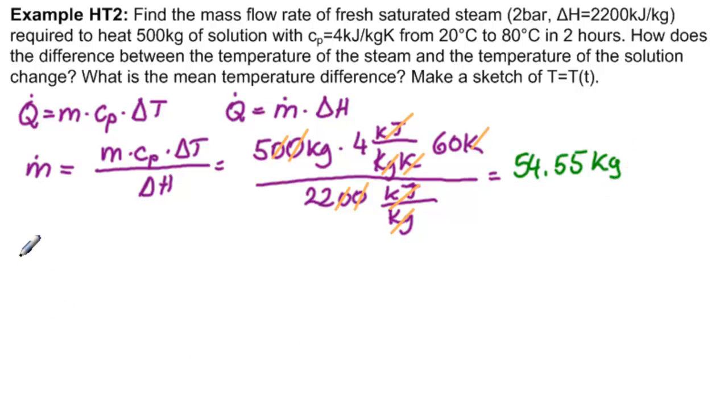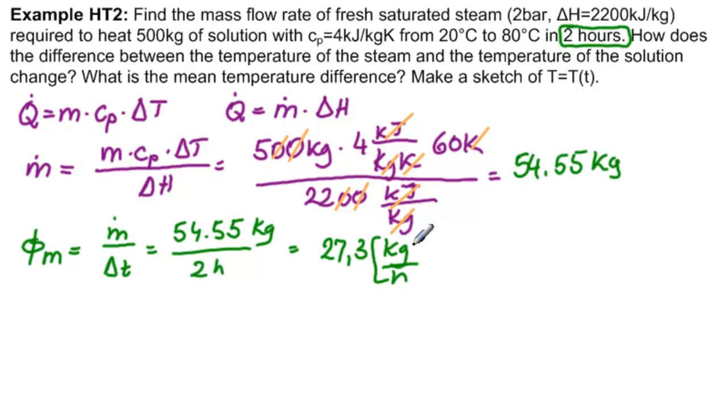And so let's get our rate, which would be divided by this 2 hours here. So our mass flow rate, divided by our time, would be 54.55 kilograms in 2 hours, or 27.3 kilograms per hour. And so that is our mass flow rate. And with that, we have finished the first part of this problem.